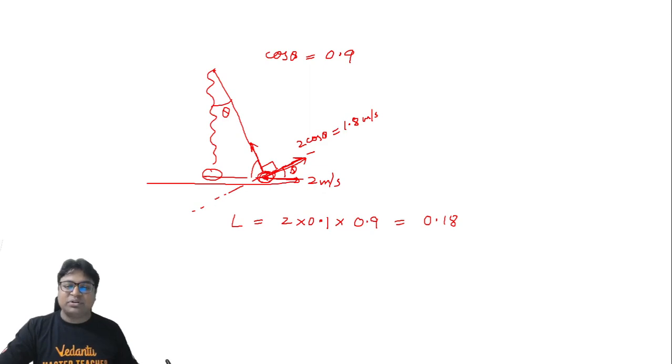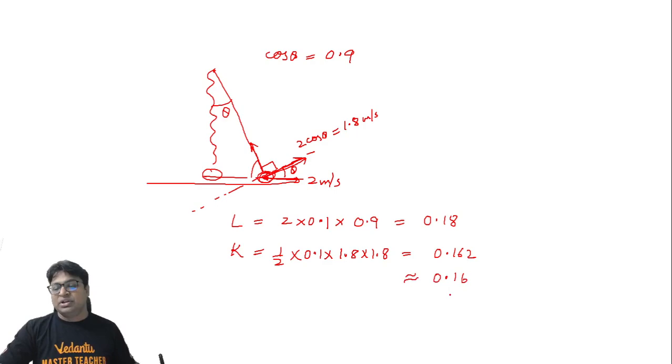After the string becomes taut, the speed of the particle will be 1.8. That means the kinetic energy of the particle will be written as half into mass into v square, that is 1.8 into 1.8. This becomes equals to 0.162. Since we have to mention the answer to 2 decimal points, I will write 0.16.